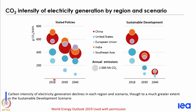The other issue is the carbon dioxide intensity of electricity generation. Looking at India, we are one of the relatively higher emitters in CO2 per kilowatt hour, and we expect that to go down over time. In the stated policy scenario it can go down by about a factor of 2, reaching around 400 grams, and in the sustainable development scenario we have to go down even more, below 200 grams.